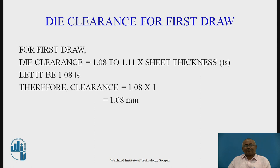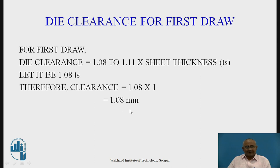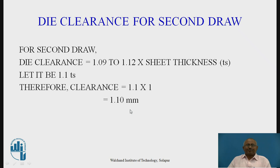Now, clearance calculation for the die in the first draw. Die clearance in the first draw is 1.08 to 1.1 × sheet thickness. Let it be 1.08 × sheet thickness. Therefore, die clearance in the first draw = 1.08 × 1 = 1.08 mm. Die clearance for the second draw is given by the formula 1.09 to 1.12 × sheet thickness. Let it be 1.10 × sheet thickness. Therefore, it will be 1.1 × 1 = 1.10 mm.